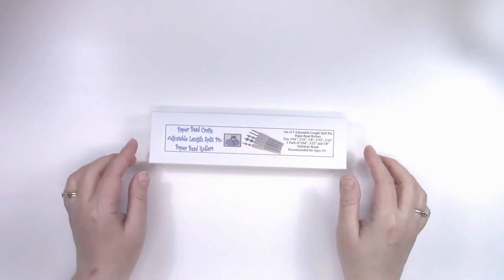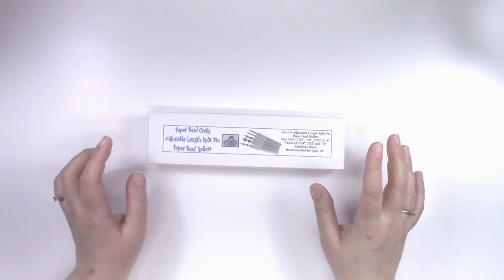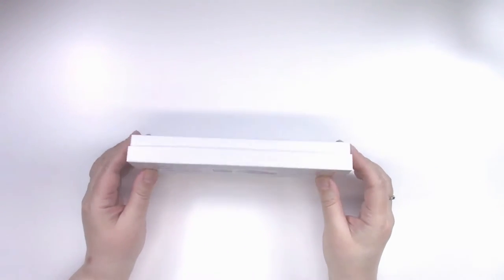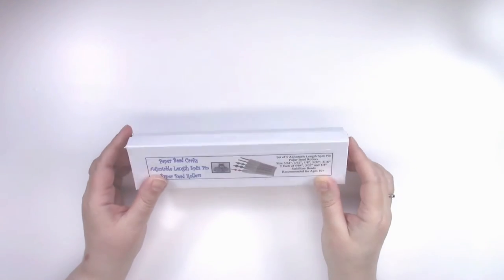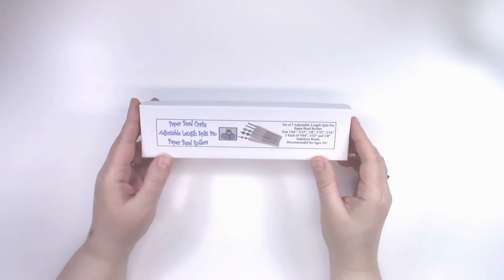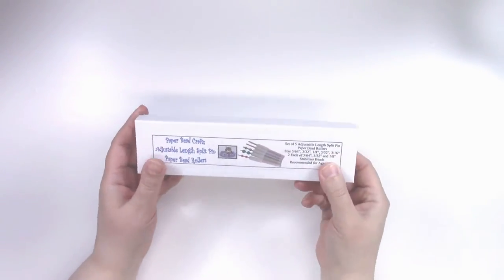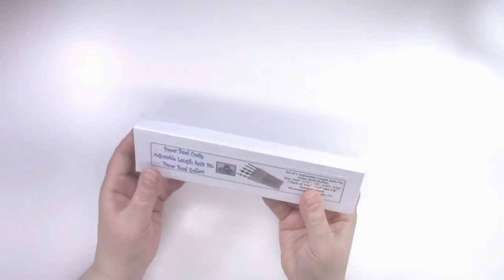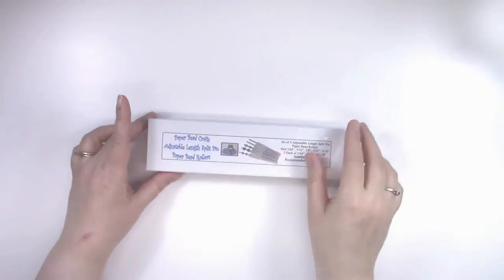When you order them, when you get them, they'll arrive in a box like this. It'll actually be shrink-wrapped too, but I don't have it shrink-wrapped here in this video. On the front, you'll see the picture and the sizes. On the back will be the barcode and other information.